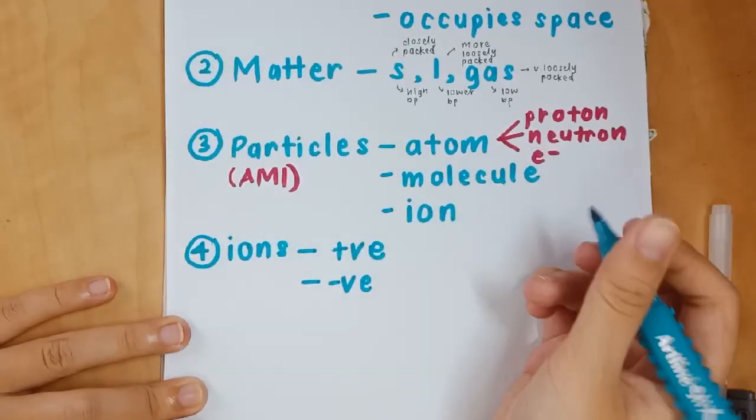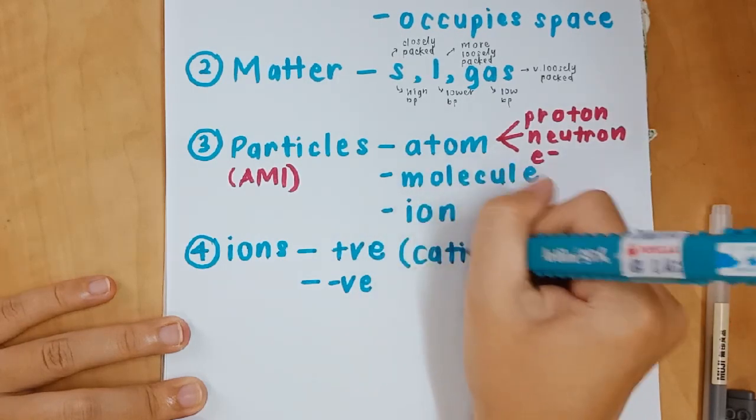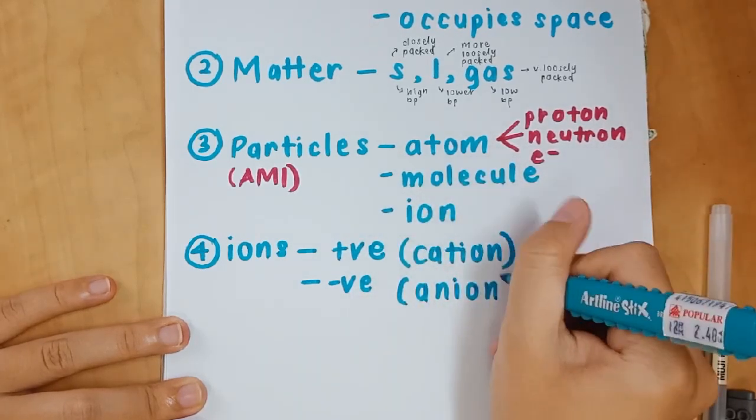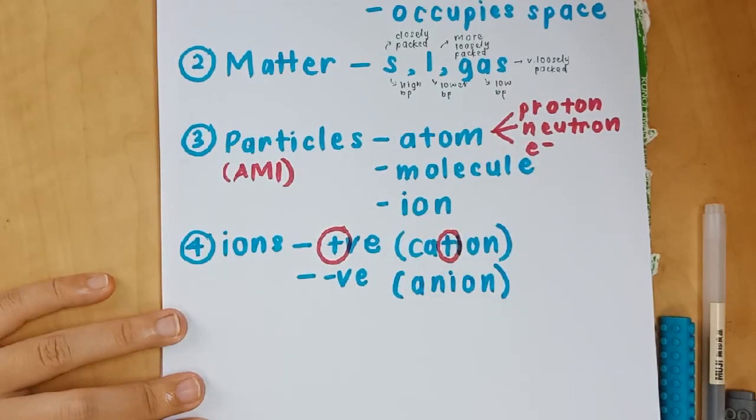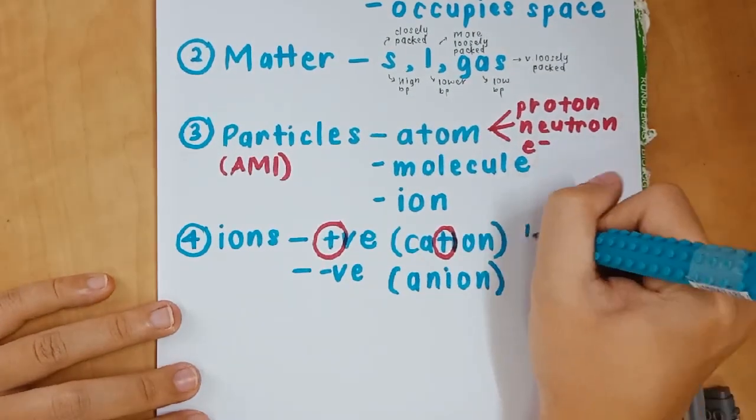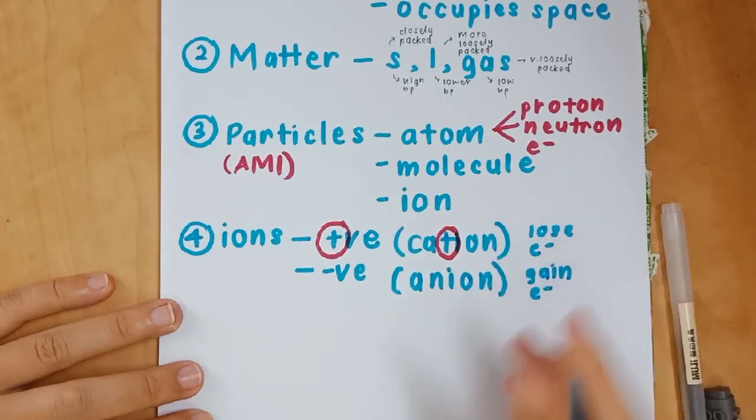Ions are divided into positive ions and negative ions. Positive ions are known as cations and negative ions are known as anions. How I remember this is that the positive sign kind of looks like the T in cations.